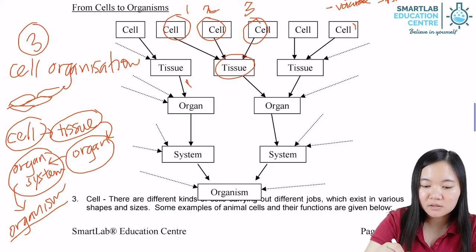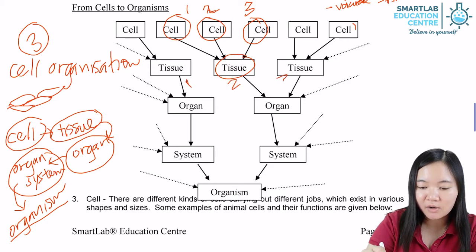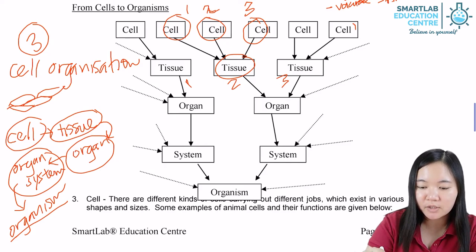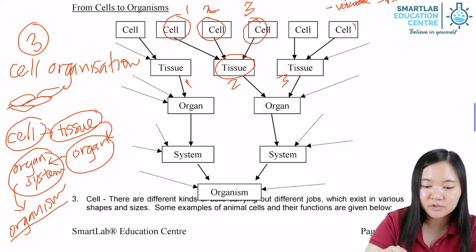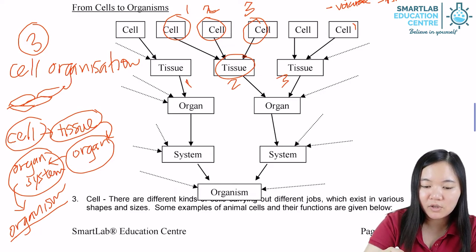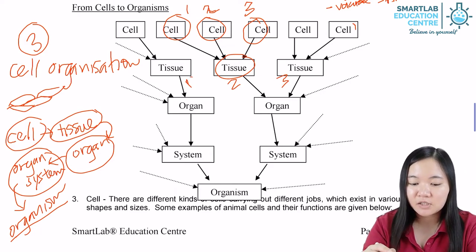However, tissue one, tissue two, and tissue three are not similar to each other. They don't all carry out the same function. Instead, tissue one carries out function one, tissue two carries out function two, and tissue three carries out function three — they all have different functions.